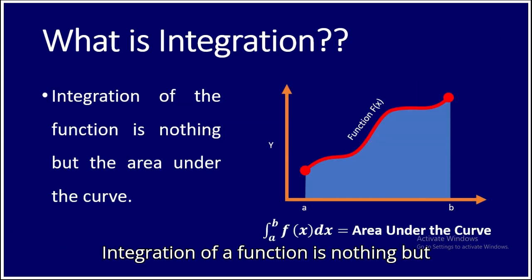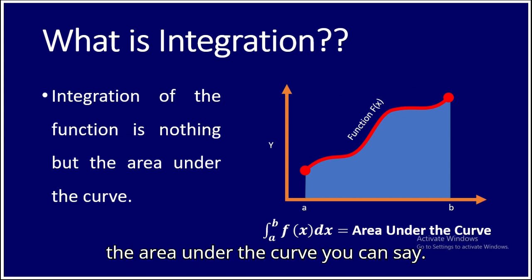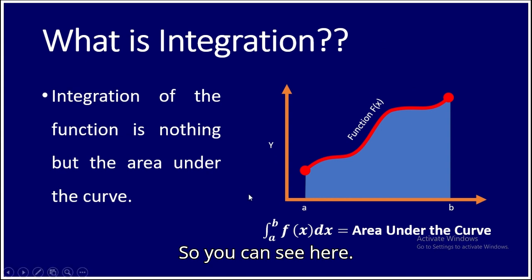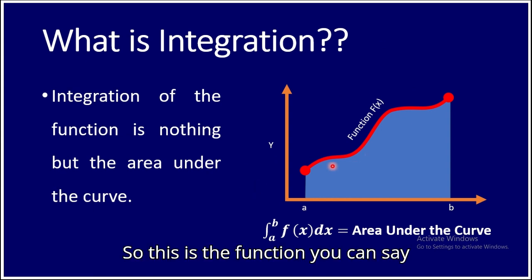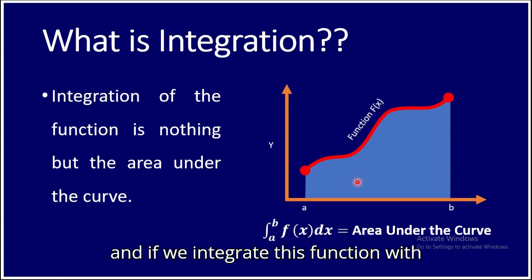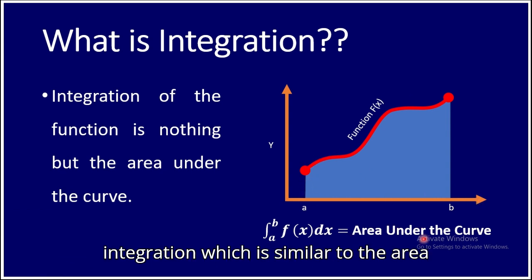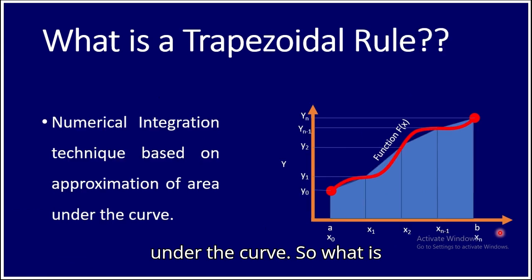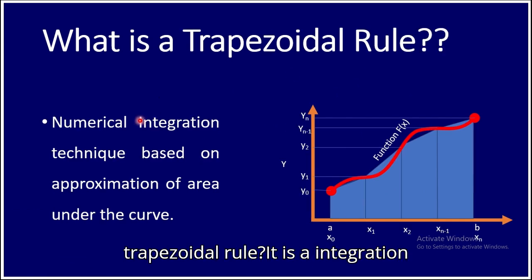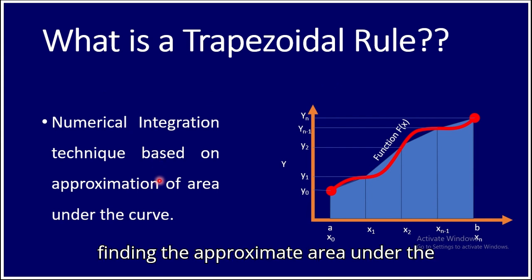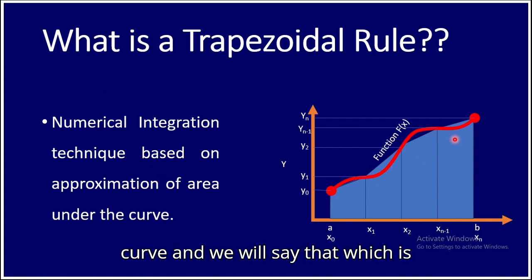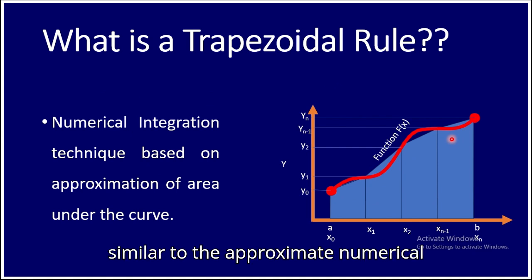So what is integration? The integration of a function is nothing but the area under the curve. So if we integrate this function with respect to dx, we will get the integration which is similar to the area under the curve. The trapezoidal rule is an integration technique based on approximation — finding the approximate area under the curve — which is similar to approximate numerical integration.